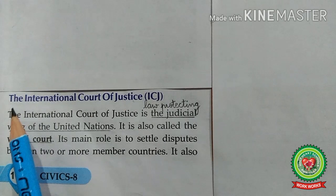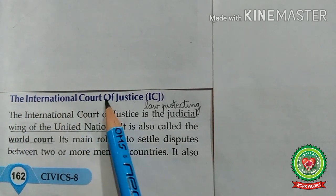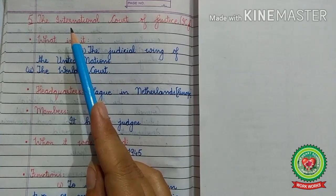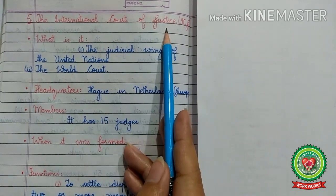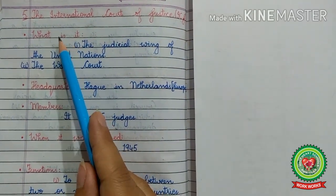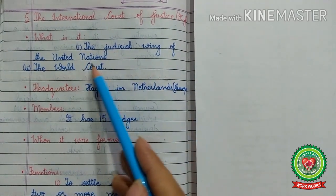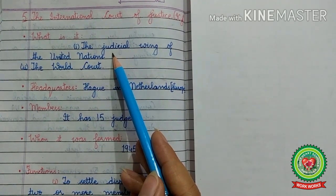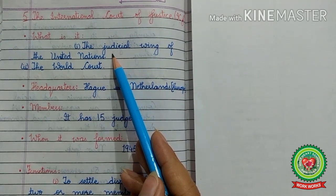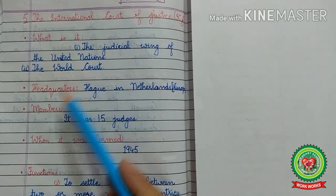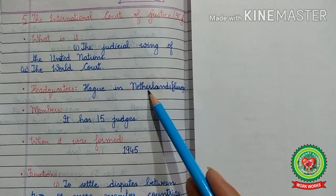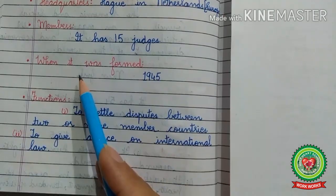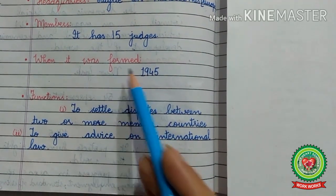The next organ of the United Nations is the International Court of Justice — ICJ. What is it? It is the judicial wing of the United Nations — judicial means law-protecting — and it is also called the world court. Headquarters: located in The Hague, Netherlands, in Europe. Members: it has 15 judges. When it was formed: it was formed in 1945.